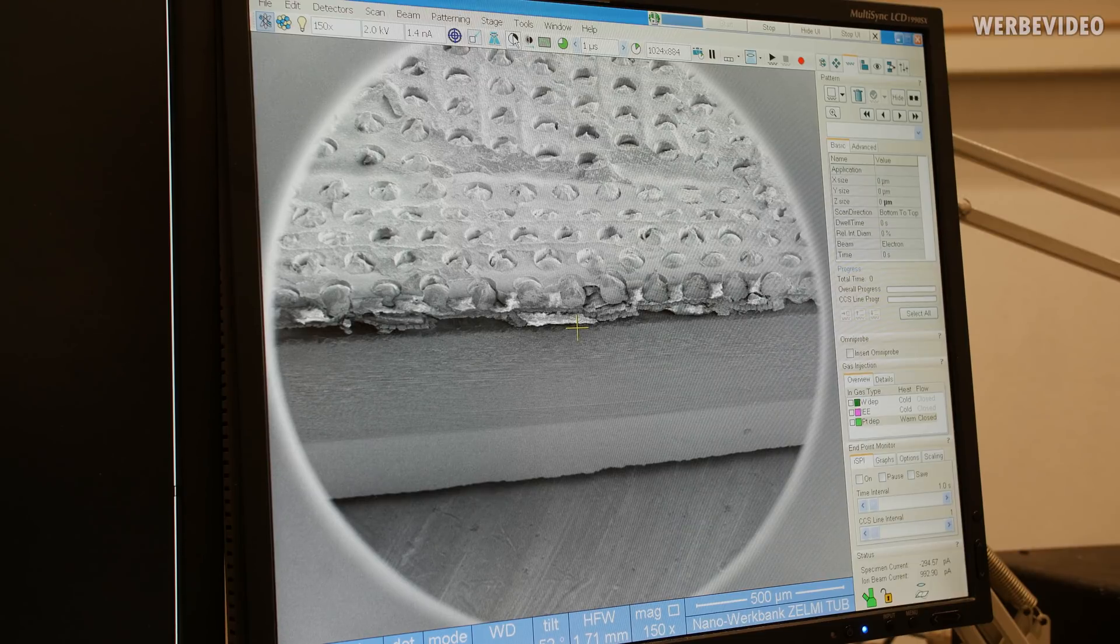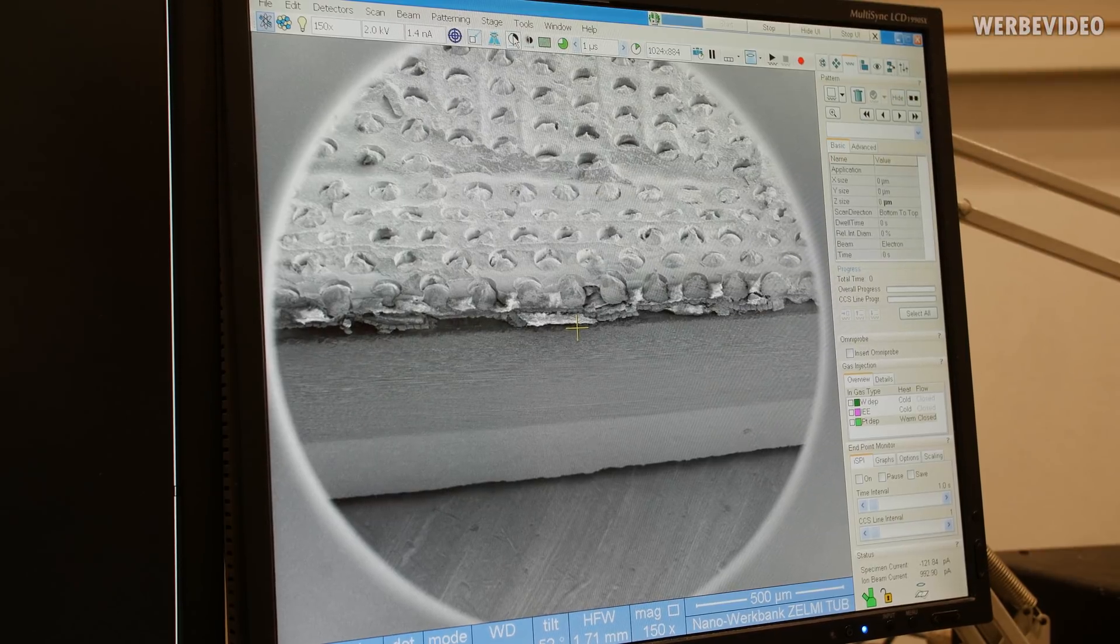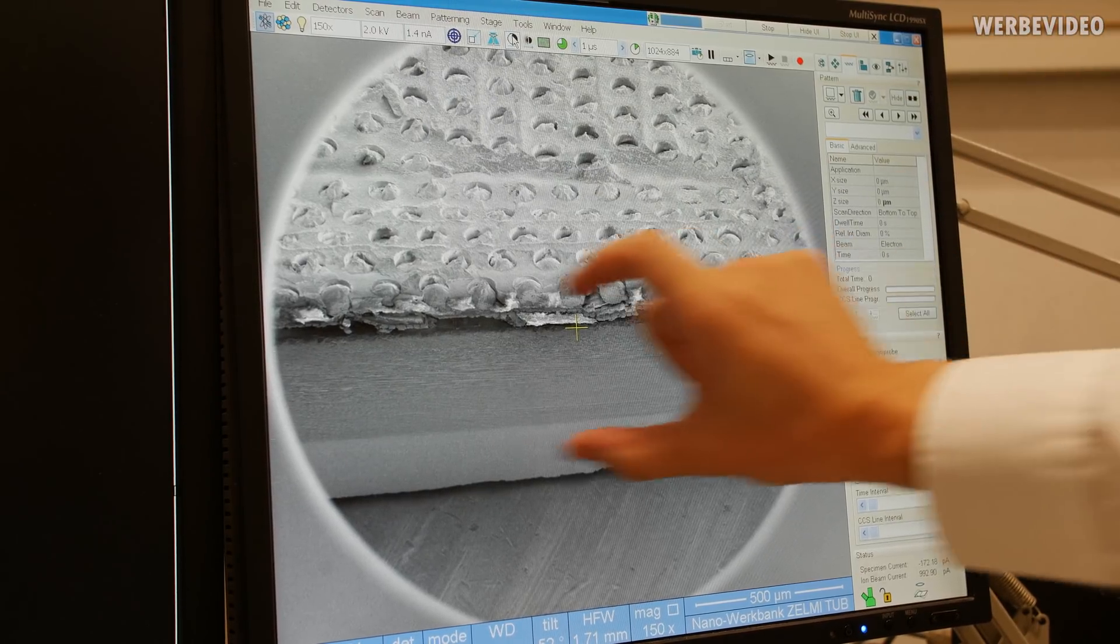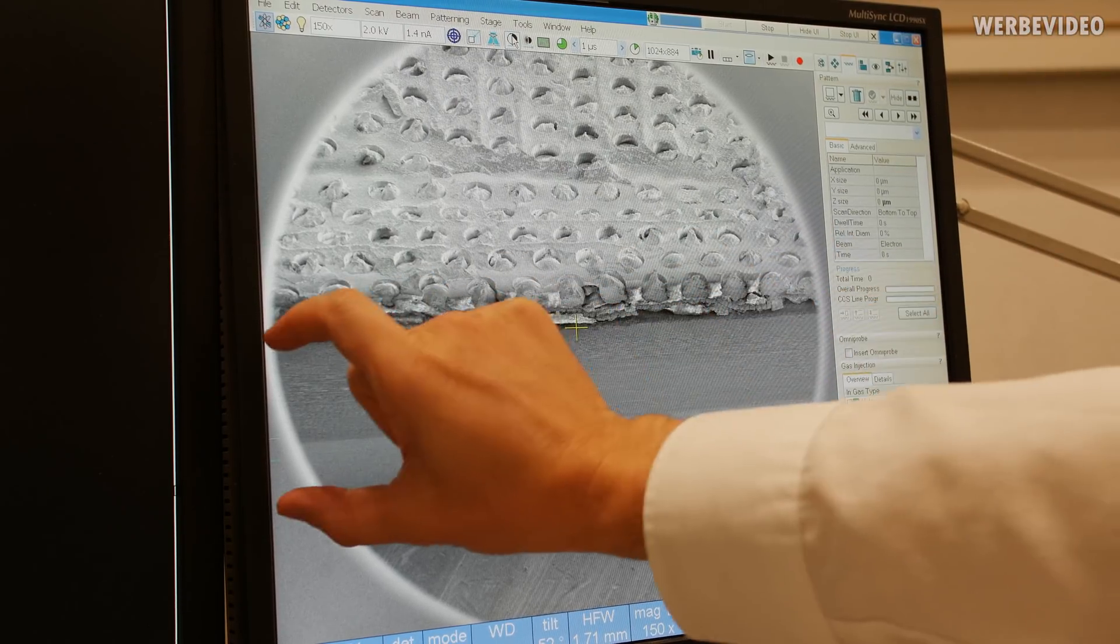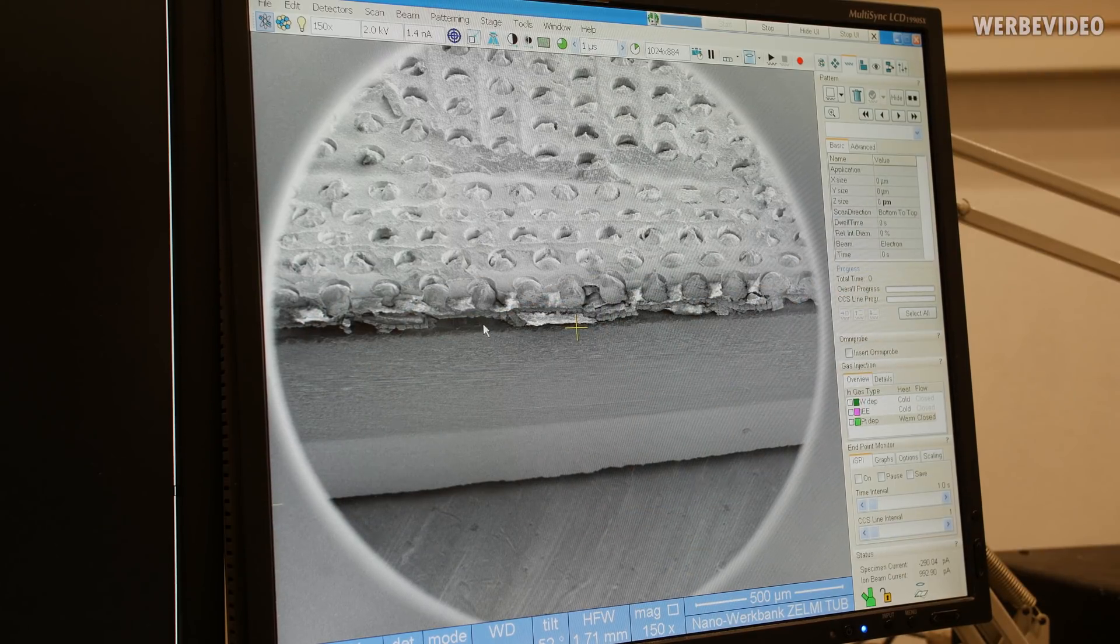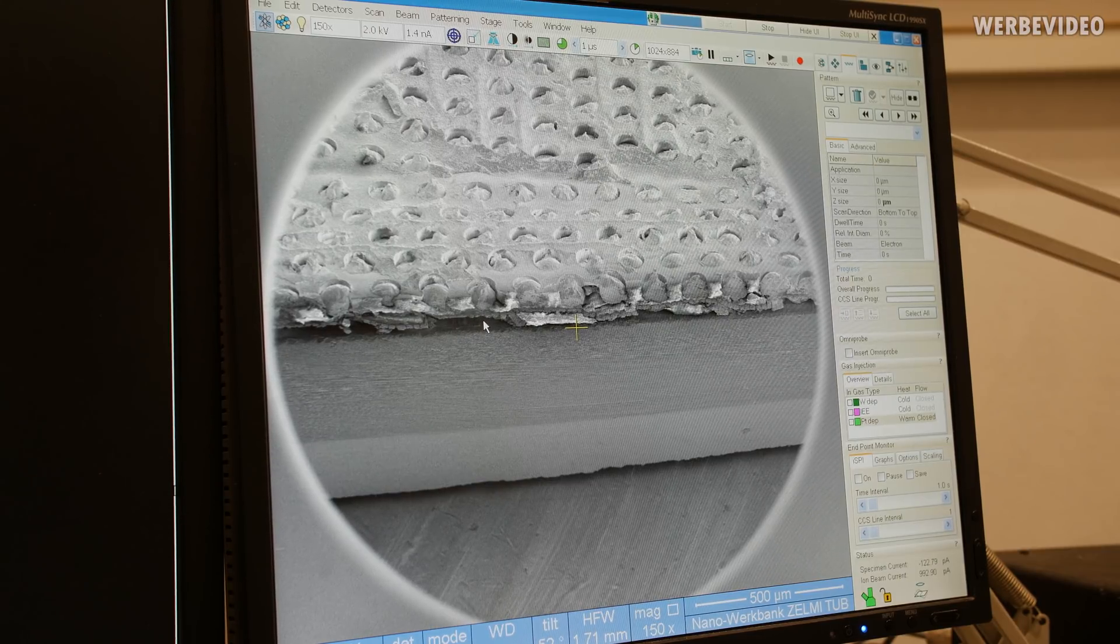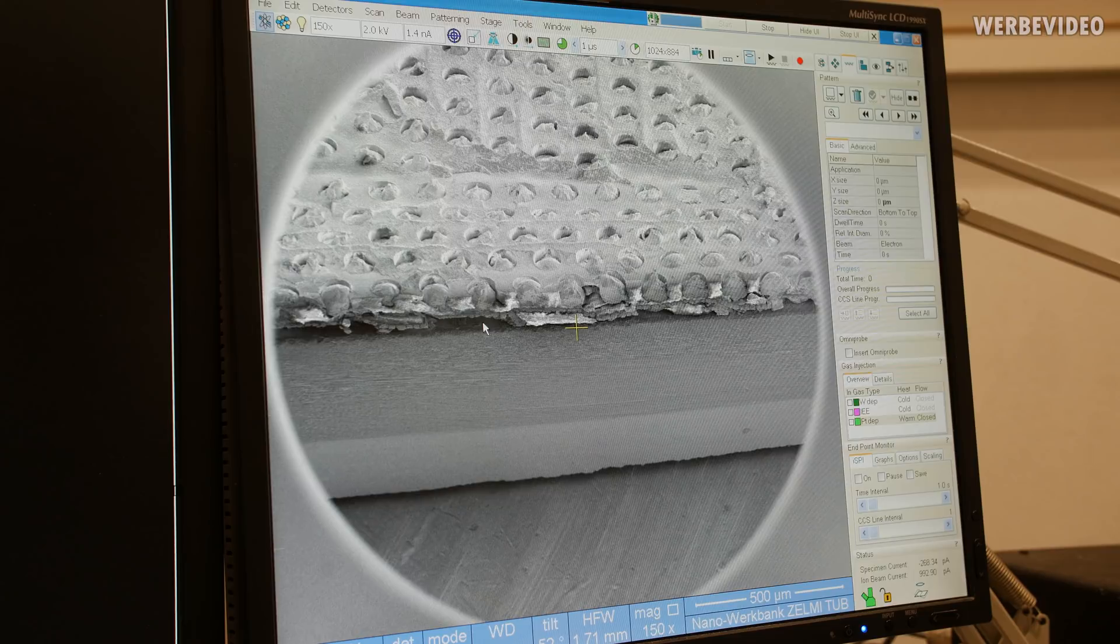The specimen is inside of the SEM and you can still see the surface with the solder bumps. Below here, this is a silicon wafer. And on top of the silicon wafer, we have these semiconductor structures that we want to investigate later in the TEM.